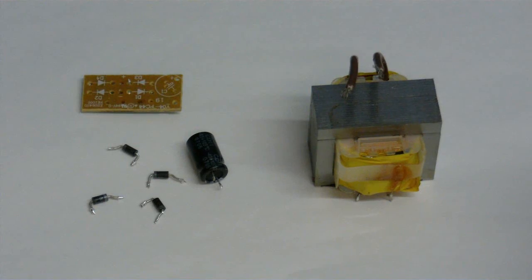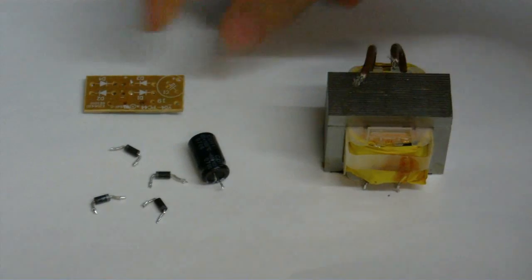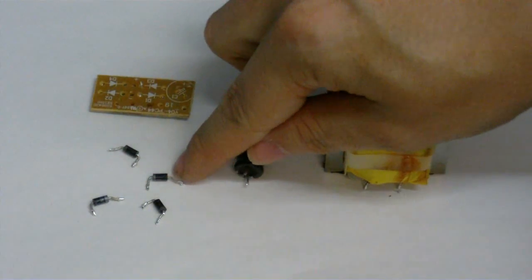Got a nice little selection of parts now. There's the transformer, the circuit board, capacitor, and some diodes.